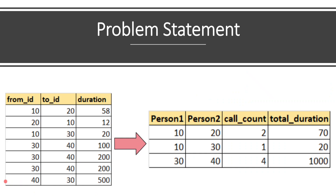Let's get into the problem statement. We are having a call history table which records who is the caller — from ID, to ID — and what is the duration for that particular call. This is the input table. The expected output is we need to calculate the number of calls that happened between two persons and what is the total duration of all calls between those two persons.